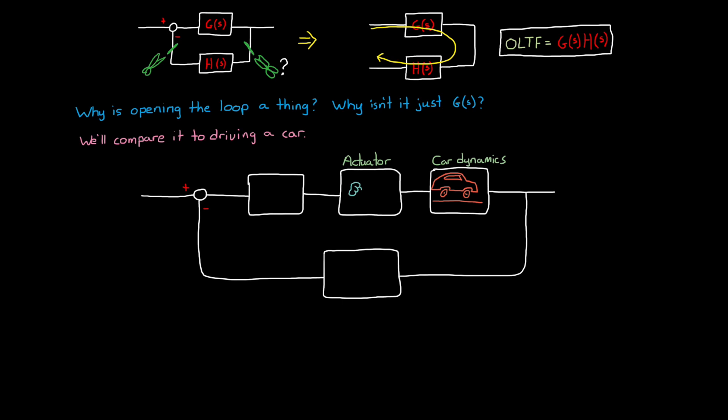If you, a human, is driving this car, your arms and legs are part of the actuator. You move your arms, the steering wheel moves, and then the car moves. How you decide to move your arms is the output of the controller, but we'll get to that in a second. The combination of the actuators and the car dynamics is the process that we're trying to control, and is what we're calling G of S from the previous block diagram.